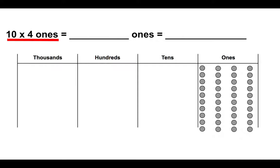Now we can answer the first part of our question. How many total ones are there? If you count them up, you realize that there are forty ones. Now in the next part of the question, we need to show forty ones in a different way on our place value chart.